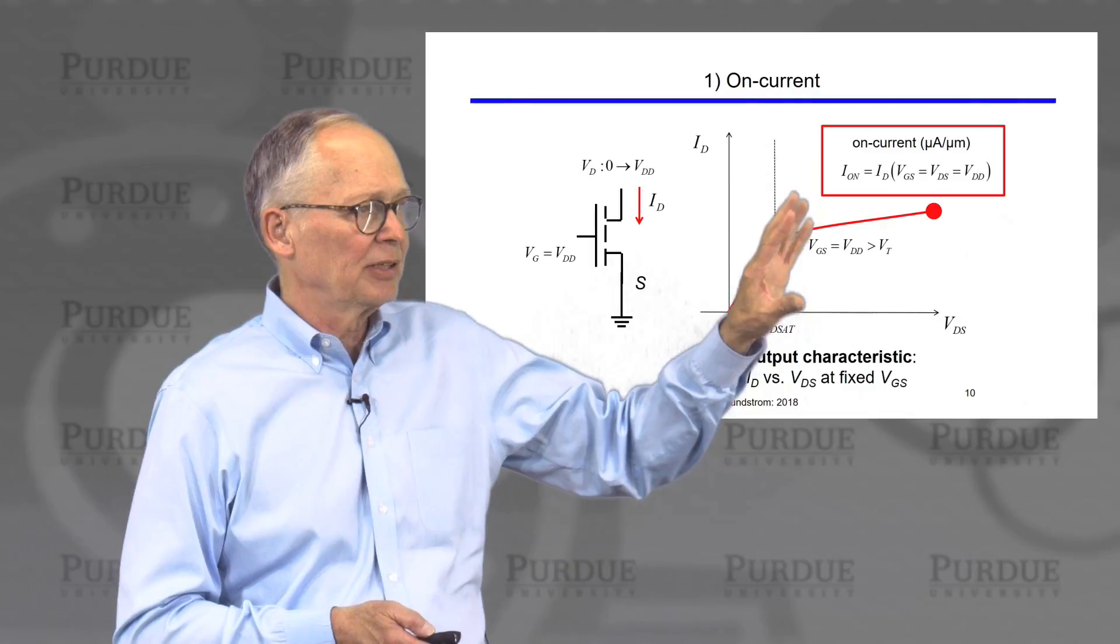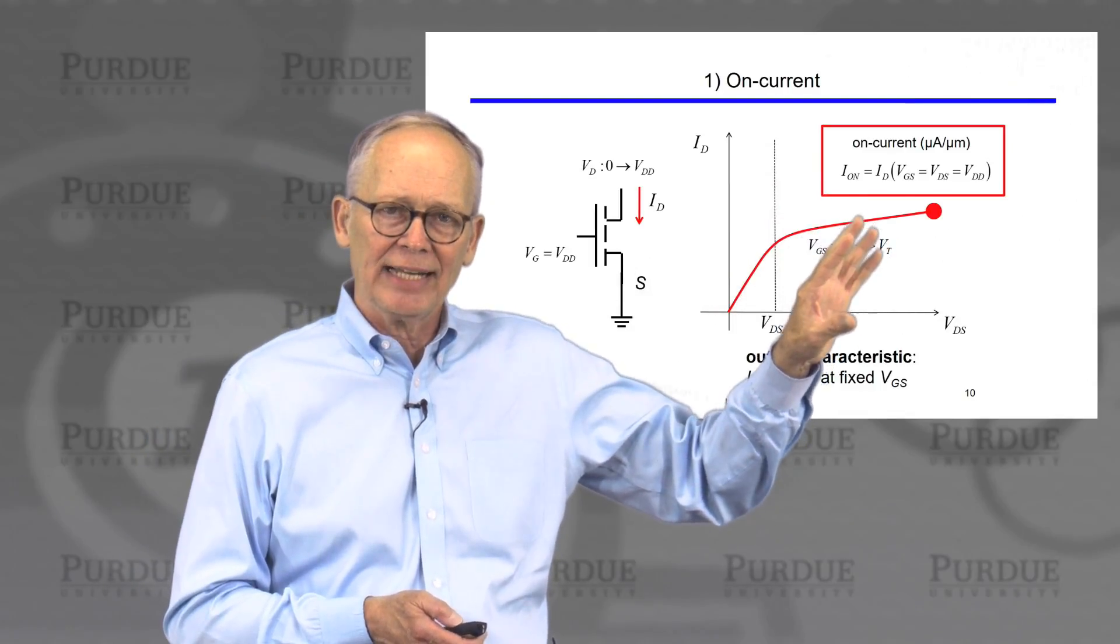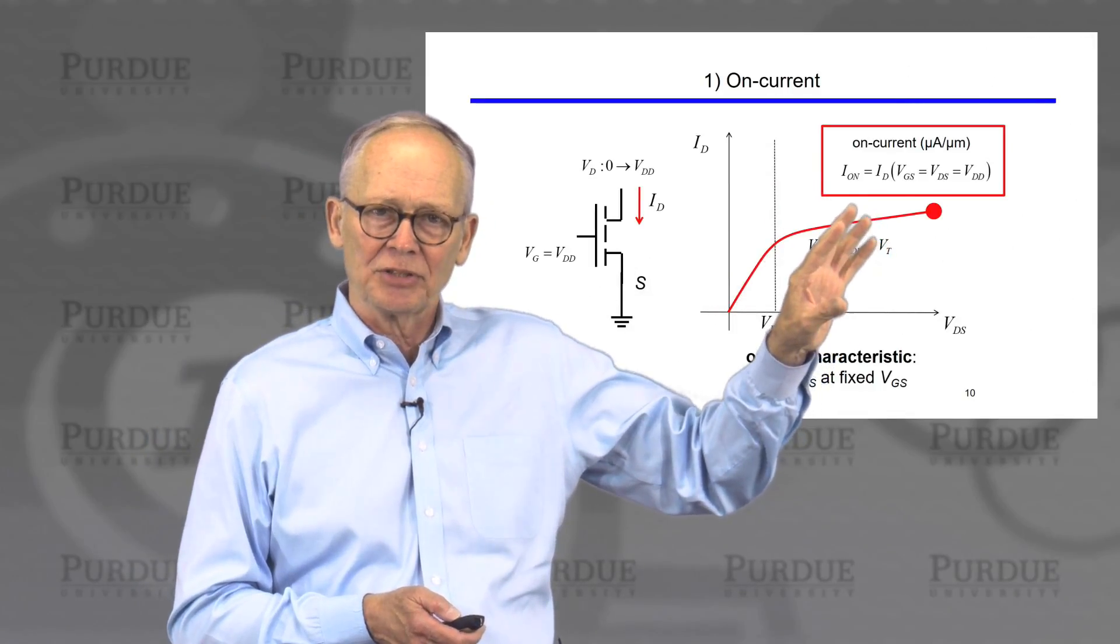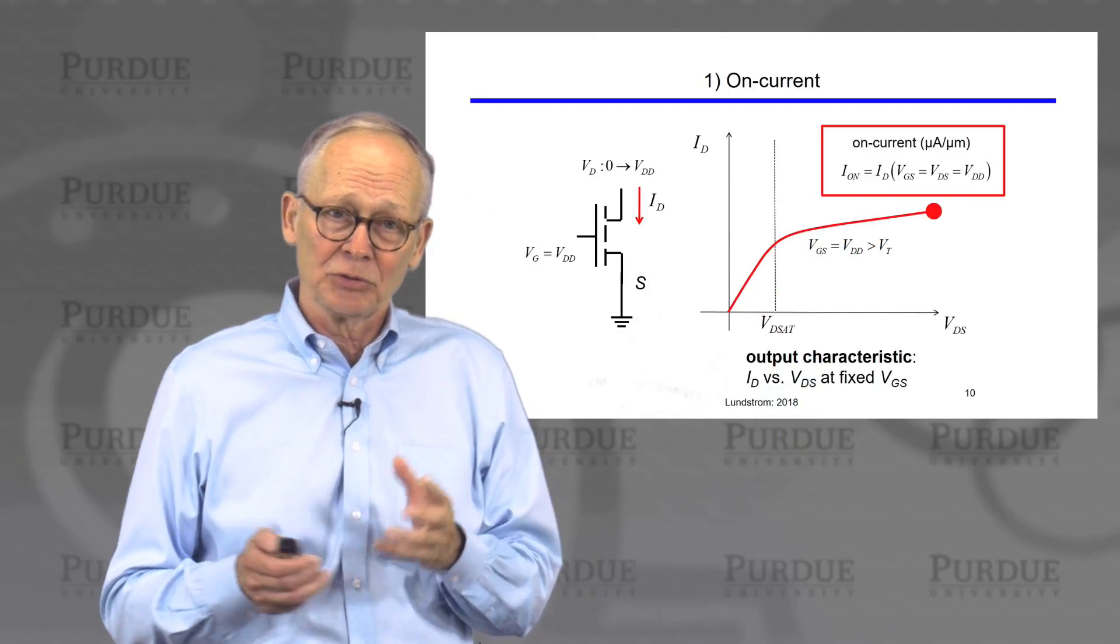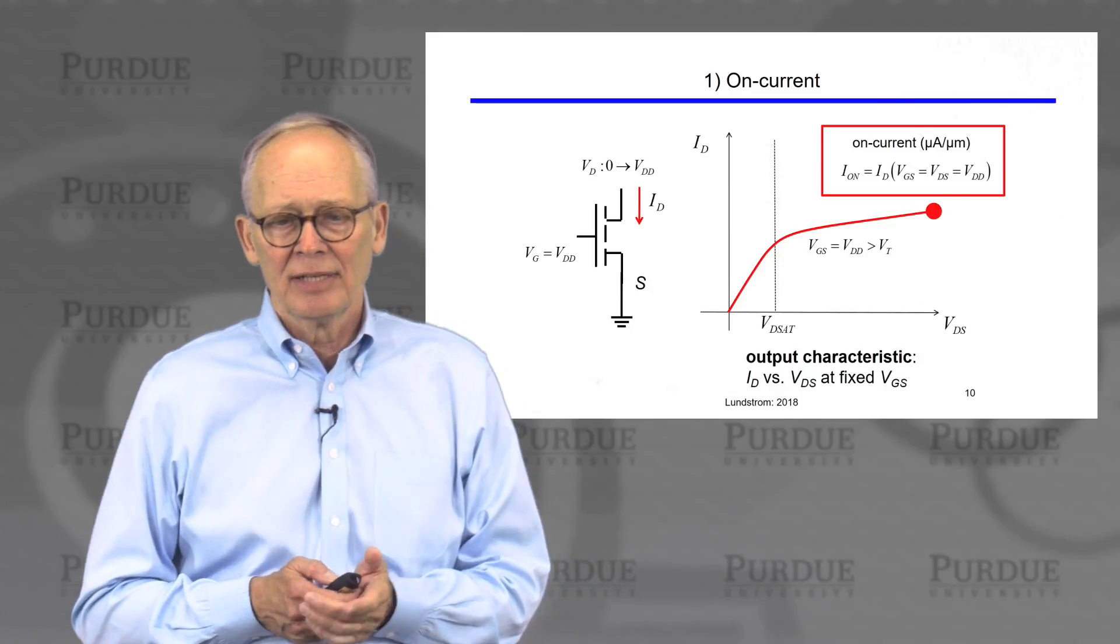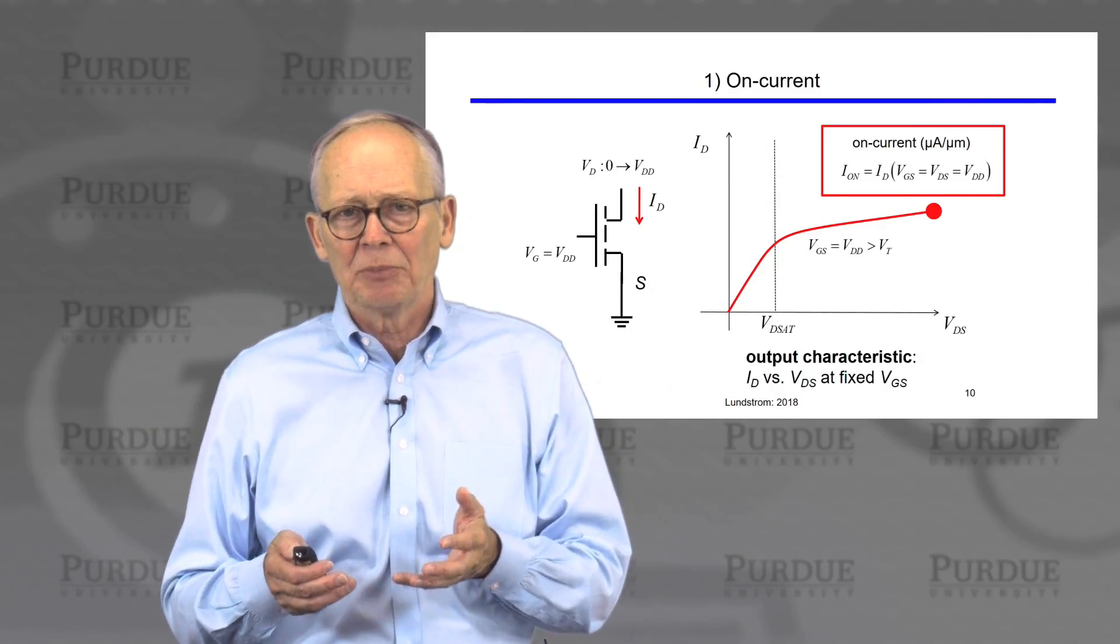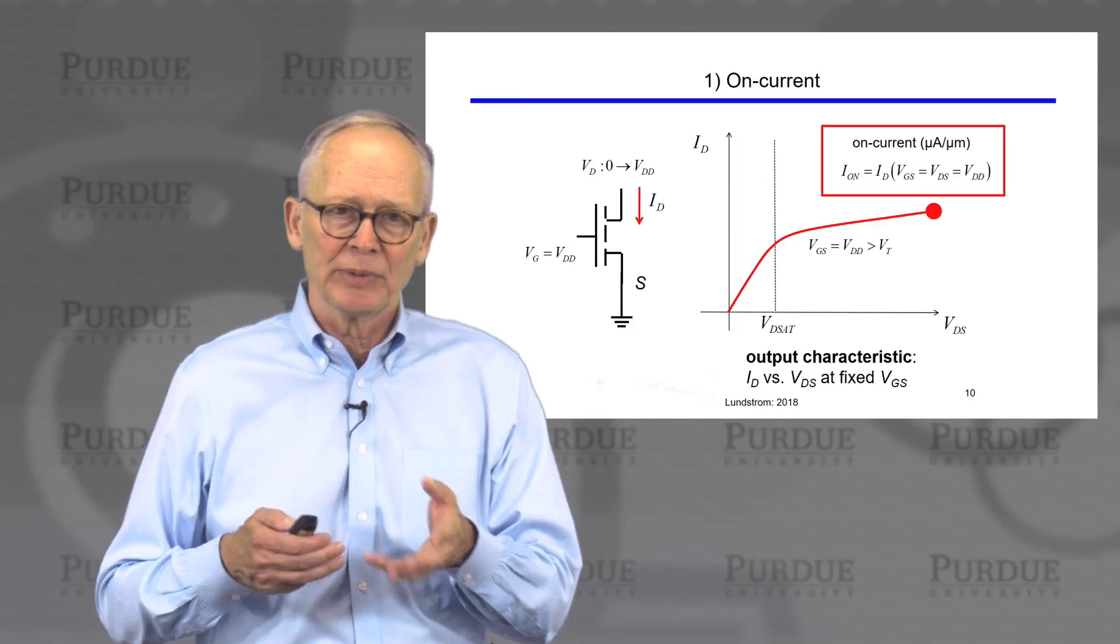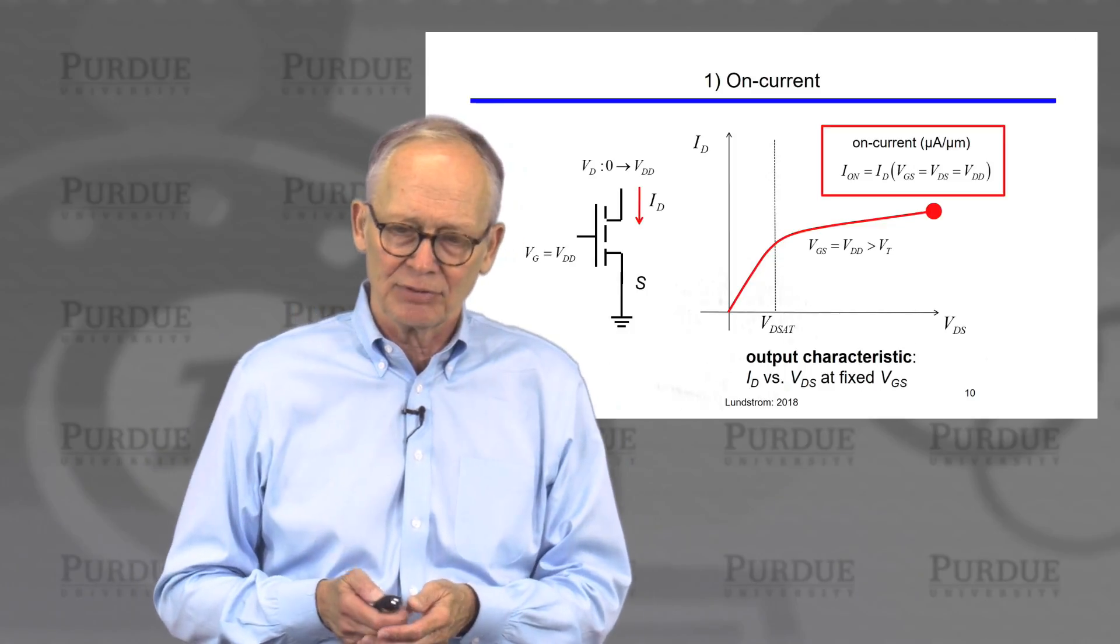The on-current is simply the current when we apply the maximum voltage to the gate and the maximum voltage to the drain. The maximum voltage is the voltage we have available in the power supply. That current is the on-current. We usually quote it in terms of microamps per micrometer of width, so that we can scale it to transistors of different widths.